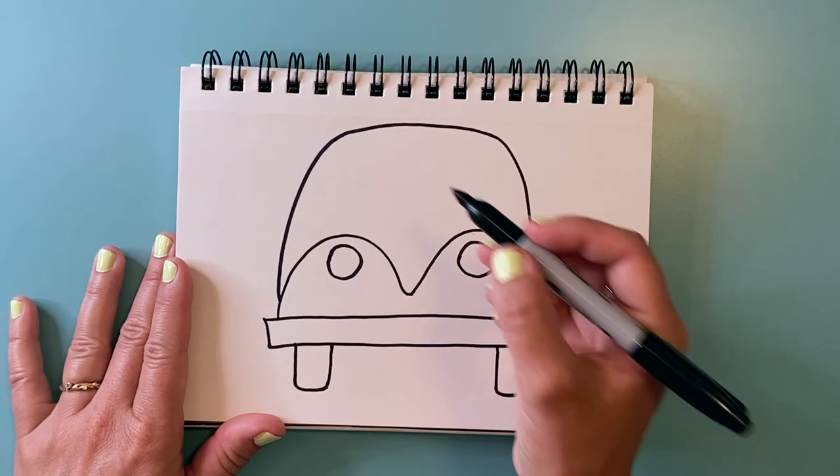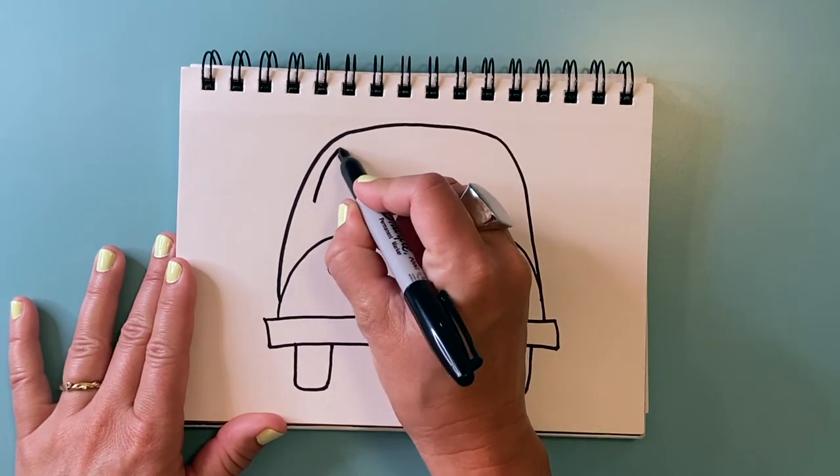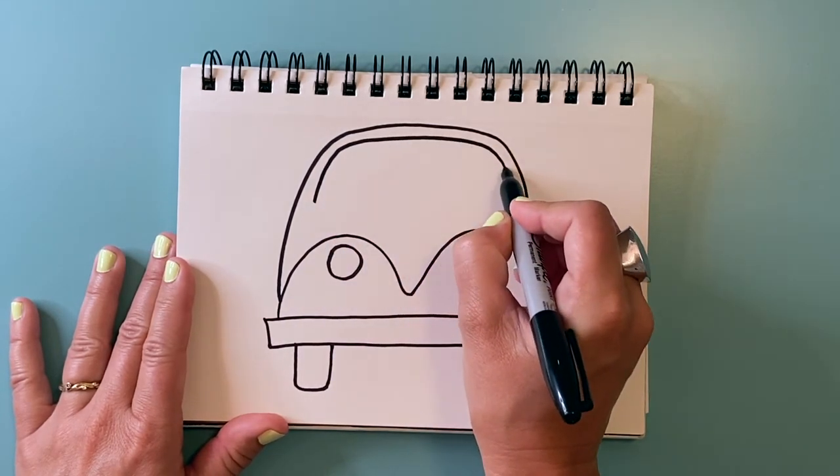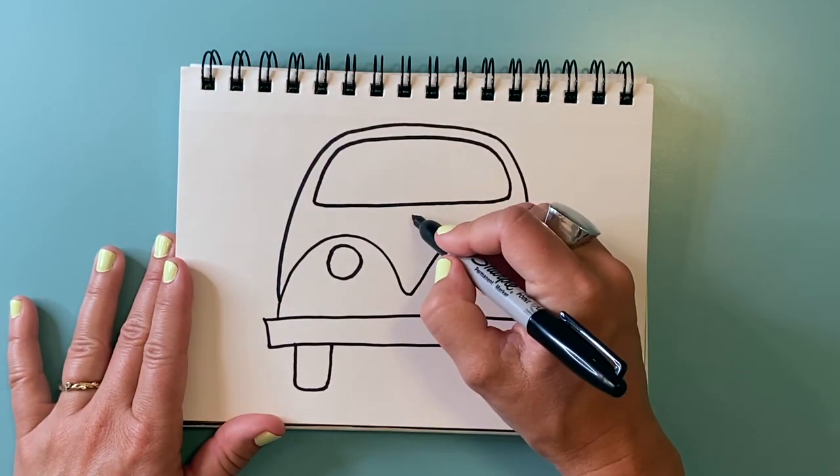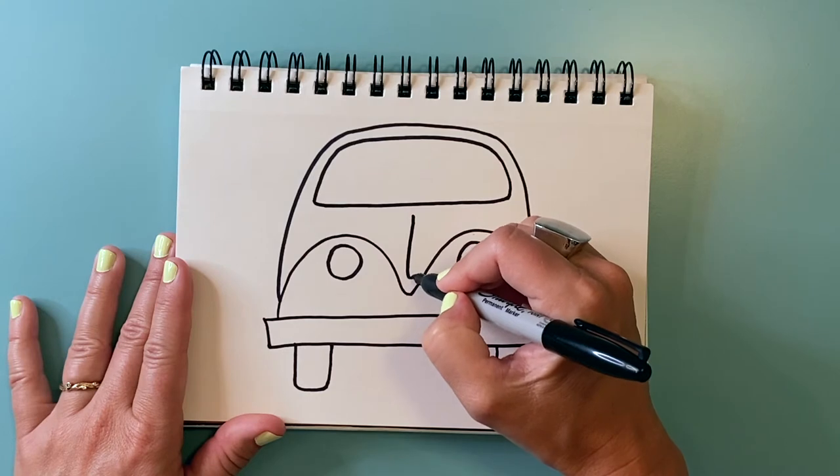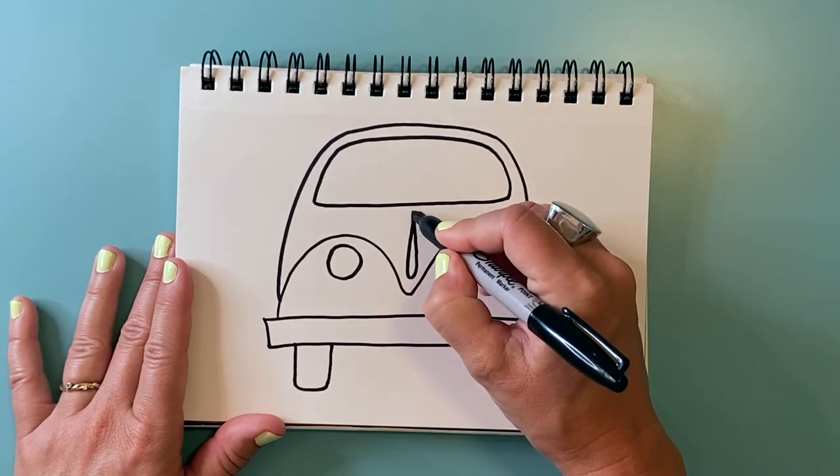And then we're going to need our windshield. We're gonna make a long teardrop shape, a long skinny teardrop shape here in the middle.